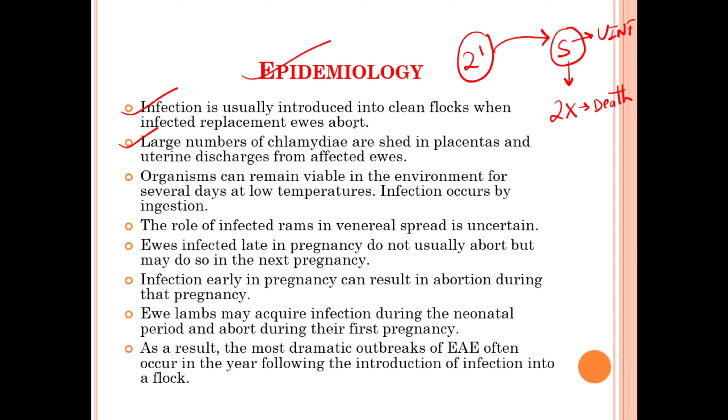Large numbers of Chlamydophila are shed in the placentas and uterine discharges from affected ewes.